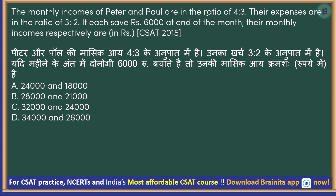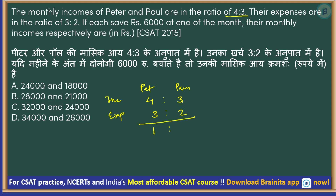Next question: the monthly incomes of Peter and Paul are in the ratio 4:3, and their monthly expenses are in the ratio 3:2. If each saves ₹6,000 at the end of the month, what are their monthly incomes respectively? So Peter's income is 4 units, expenses are 3 units, meaning he saves 1 unit. Similarly, Paul's income is 3 units, expenses are 2 units, so he also saves 1 unit.